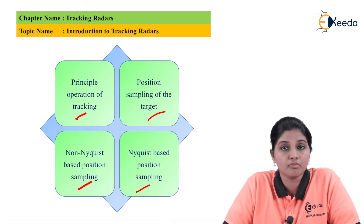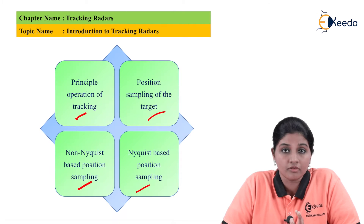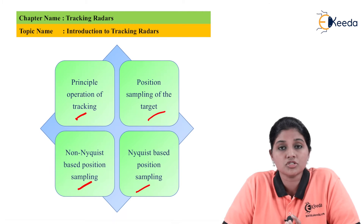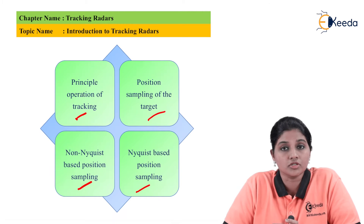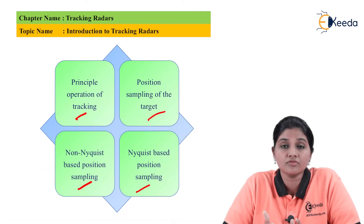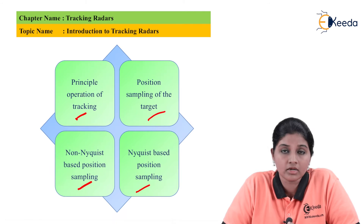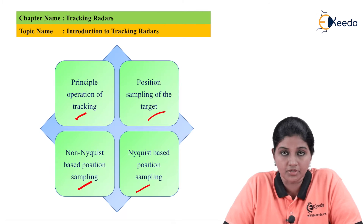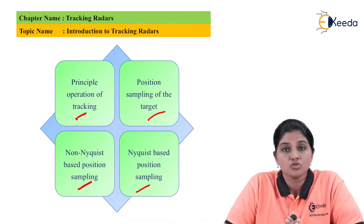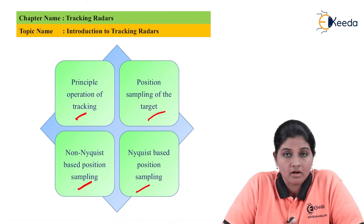We can detect the future path of the object on the basis of range, angular velocity, azimuth angle, or elevation angle. We can also predict the future path of the target by taking a combination of these parameters.